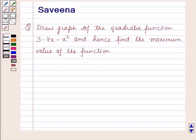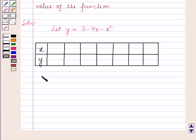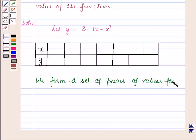Hello and welcome to the session. In this session we will discuss a question which says: draw a graph of the quadratic function 3 minus 4x minus x squared, and hence find the maximum value of the function. Now we will start with the solution. Here let y is equal to 3 minus 4x minus x squared. For drawing a graph, we will form a set of pairs of values for x and y.